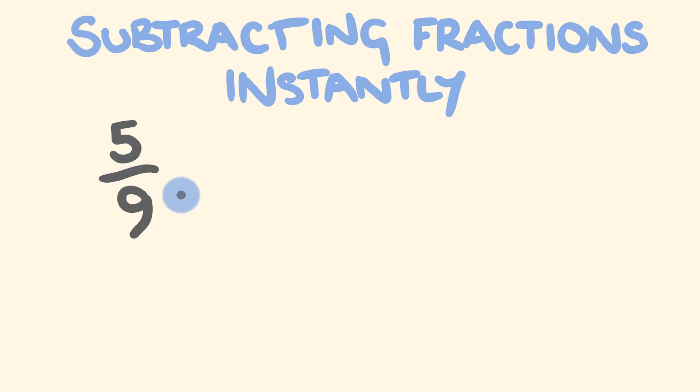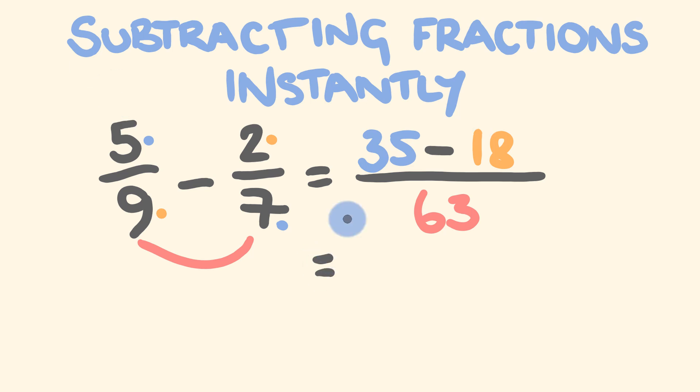What about we do five ninths and we're going to subtract from that two over seven. Usually a bit annoying to try and find common denominators here, but for us, easy. Nine times seven is sixty-three. We're going to now go five times seven. Seven fives are thirty-five. The subtraction stays the same, and two times nine is eighteen. What do we have now? Thirty-five take away eighteen is seventeen.